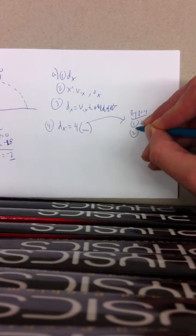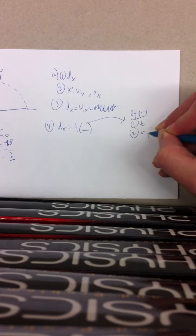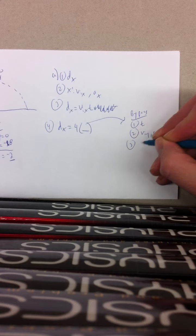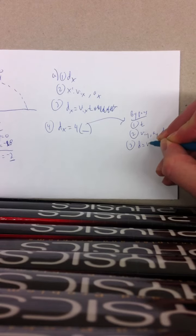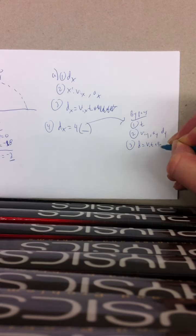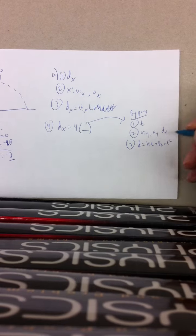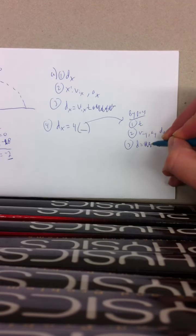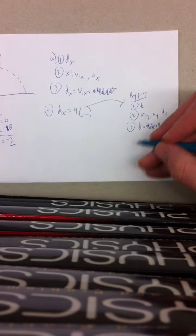So we solve for t. We add vi, ay, and dy. We can use d is equal to vit plus 1.5at squared. I can get rid of the vi, because vi is equal to 0.